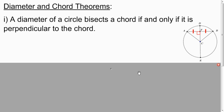So here's some theorems about diameters and chords, and these are all if and only if statements. That means that they hold in both directions. So if we have a diameter bisecting a chord, then it's going to be perpendicular to the chord. And the other direction holds as well. If we have a diameter perpendicular to a chord, then it also bisects the chord.